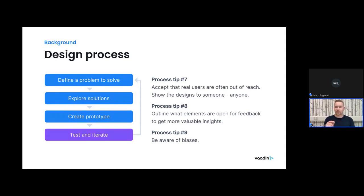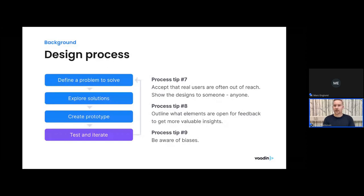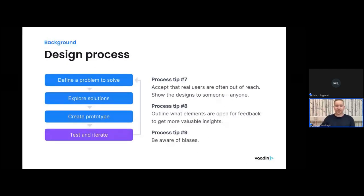As the last tip here, be very much aware of different biases. This could include the sunk cost bias — you've worked very hard on something, so it must be good. On the other hand, your testers might be biased not to hurt your feelings, because they know you worked two weeks on it, so they don't want to shoot it down even if it's not ideal. Another typical bias is confirmation bias — you've formed your own hypothesis and you're only looking for things to confirm it.